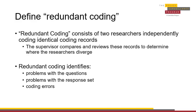Redundant coding consists of two researchers independently coding identical records from the same jurisdiction. As the researchers perform redundant research to ensure all the citations within the jurisdiction are included, they will also redundantly code those same jurisdictions to ensure all questions have been answered correctly. Redundant coding identifies problems with the questions, problems with the response set, and coding errors.